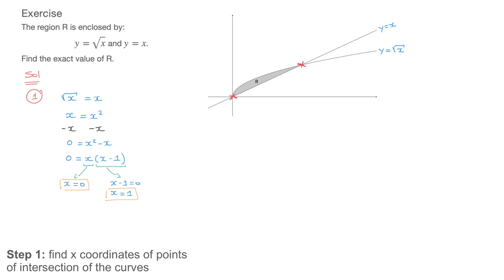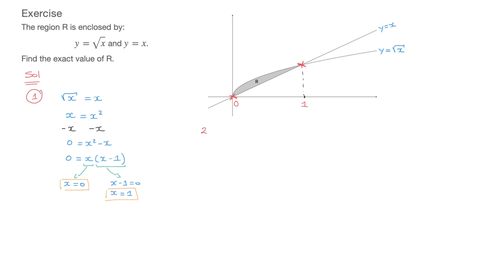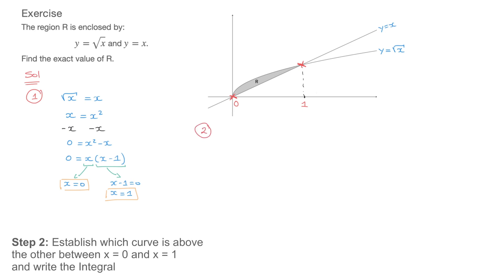I can add those x-coordinates to the diagram: the points of intersection have x-coordinates 0 and 1. Now for step two, which is short but important: we need to write the correct integral to evaluate. For that, we need to note which curve is above the other between these two x-values. Looking at the enclosed region, the curve on top is y equals the square root of x.